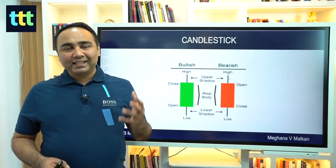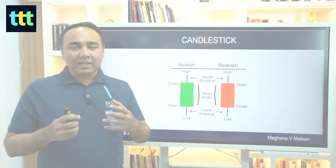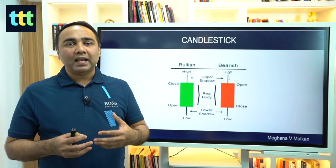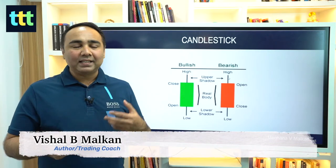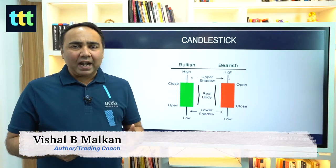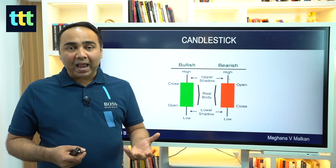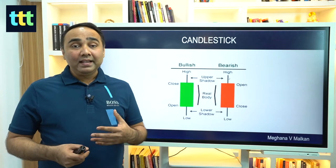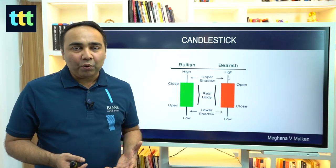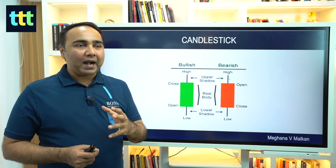Today's topic is candlestick patterns. You must be seeing candlestick patterns day in and day out on charts and on various websites. Now, how did this candlestick pattern get invented? It was invented in Japan in the year 1600 — it's almost 500 years old. Let's understand the basics of candlestick patterns.